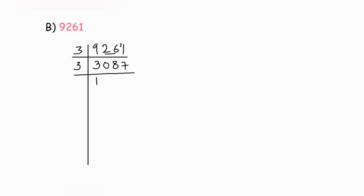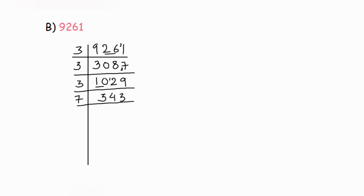Now 343 doesn't go into the three times table, and it doesn't go into the five times table either. So the next prime number to try is seven. 343 ÷ 7 = 49, then 49 ÷ 7 = 7, then 7 ÷ 7 = 1. So we have found all the prime factors.